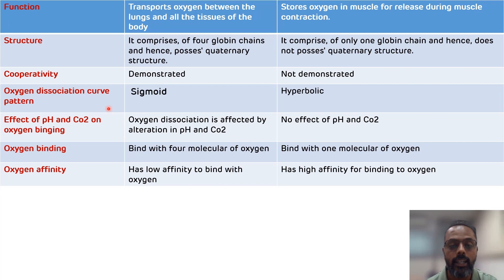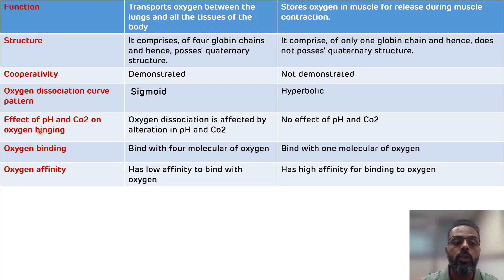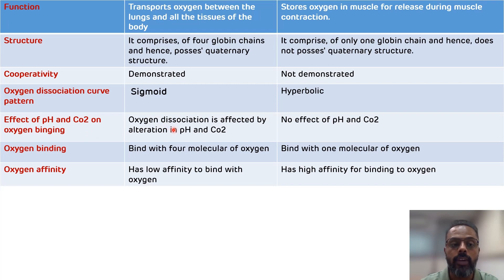Another difference is related to the effect of pH and CO2 on oxygen binding. The pH and CO2 will affect oxygen binding in the case of hemoglobin, while there is no such effect of pH and CO2 in the case of myoglobin.